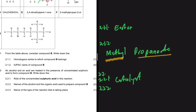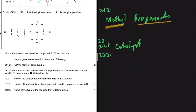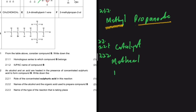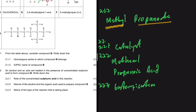For question 2.2.2, the names of the alcohol and organic acid used to prepare compound B: we already deduced these when naming compound B. The alcohol used is methanol and the acid used is propanoic acid. For 2.2.3, the name of the type of reaction taking place is esterification — some books also say condensation, which is also correct and appears in memos.